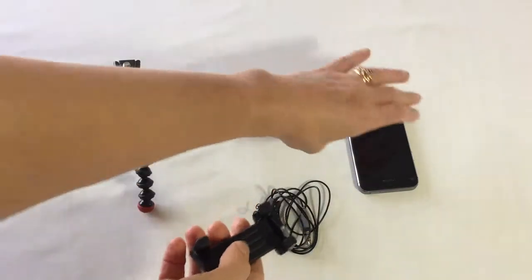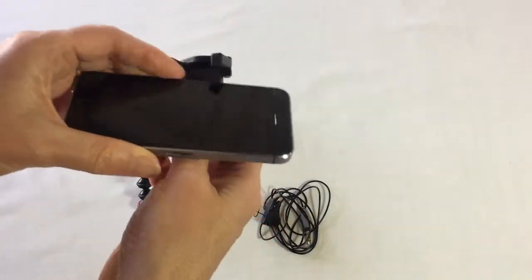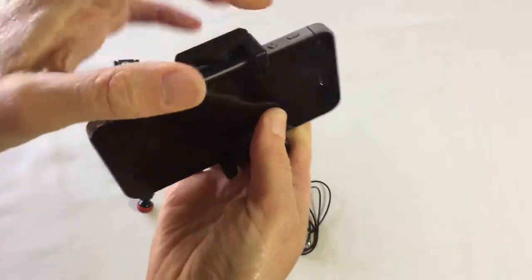The mount attaches to the iPhone like this. Just clip it on like that—just be careful not to get the volume buttons.